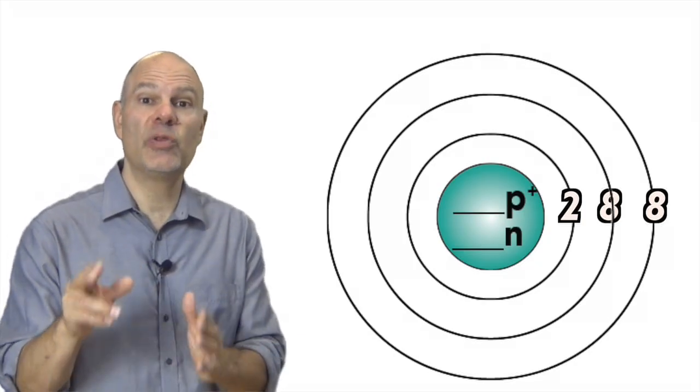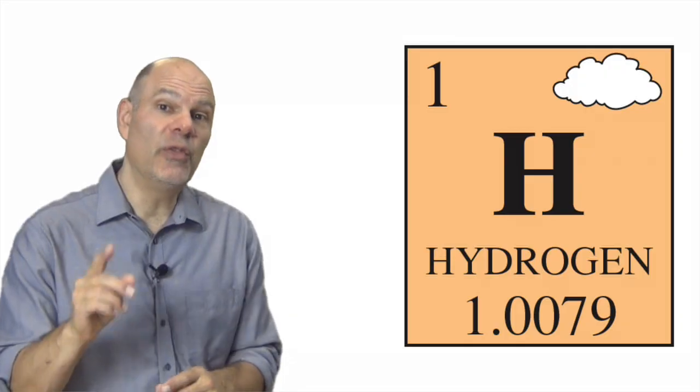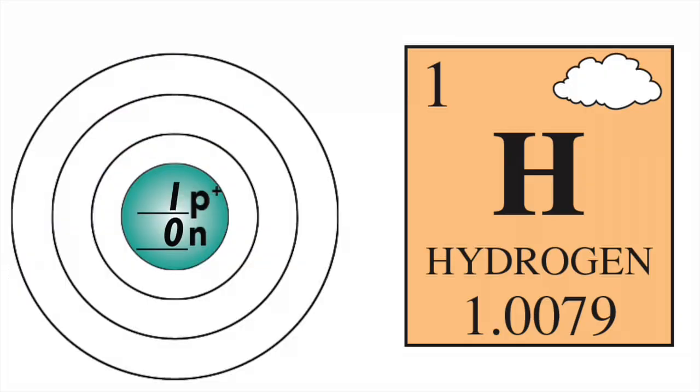Let's see how this works with the two smallest elements, hydrogen and helium. Hydrogen consists of one proton and one electron. The proton goes in the nucleus. The single electron goes into the first orbital.